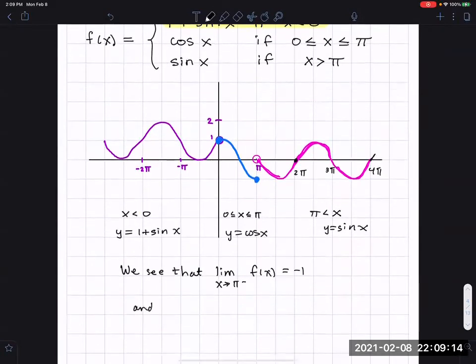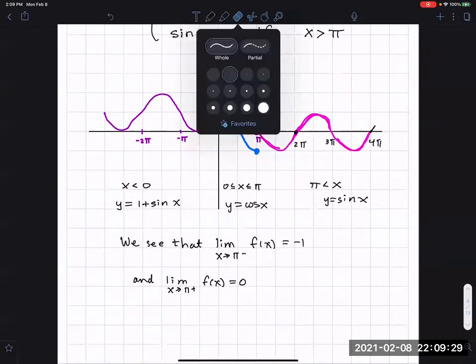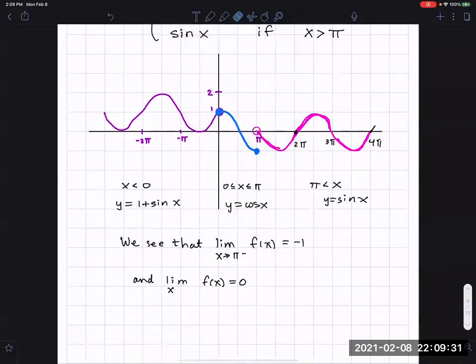And at the same time, the limit as x approaches pi from the right of f(x) is zero. Therefore, the limit does not exist as x approaches pi.